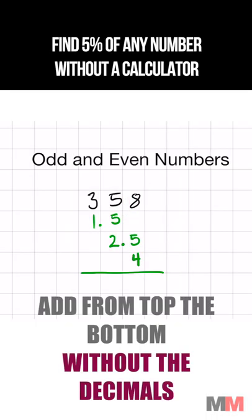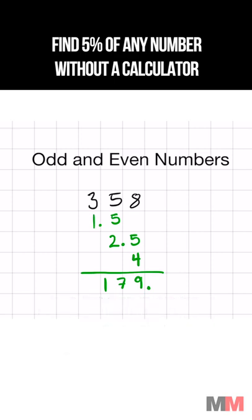Just imagine that the decimal points are not there and add them up. That would be 971. Take the decimal point, move it one place value over, and your answer is 17.9.